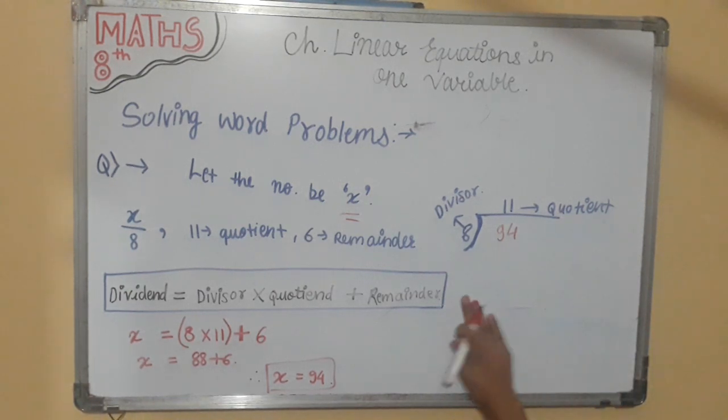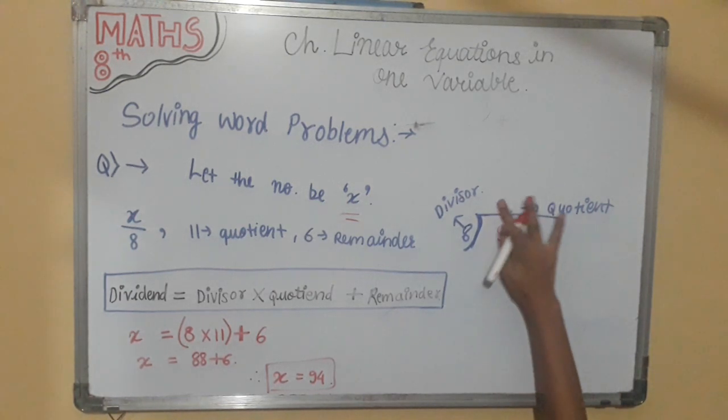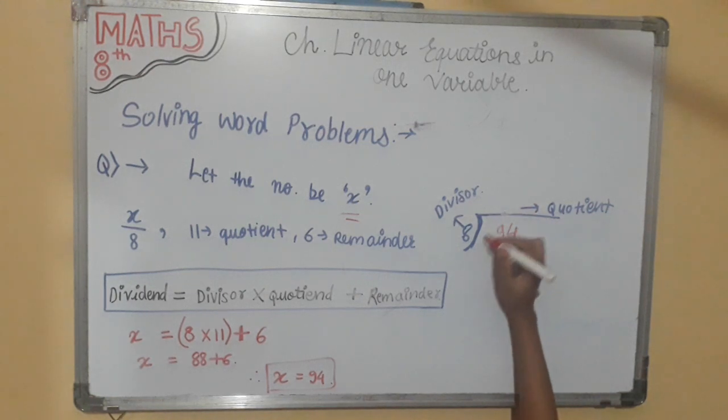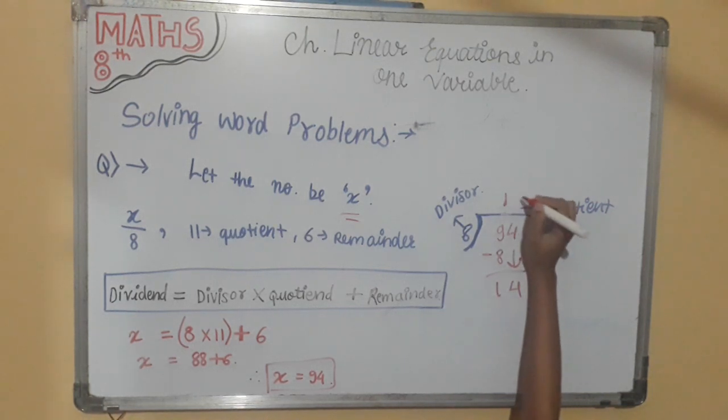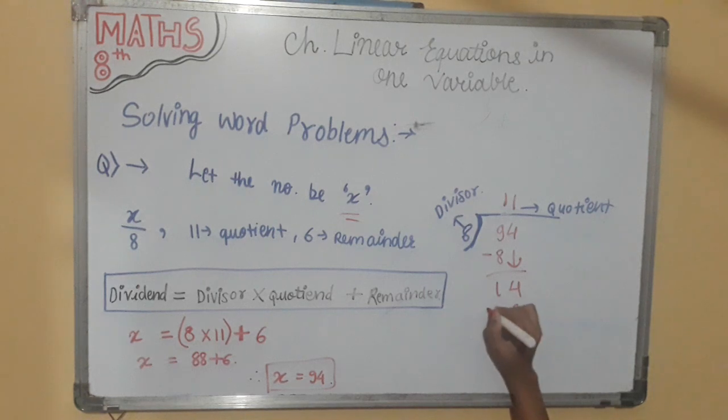First we will forget this all. 8 once a 8. Upon remainder 1. This will come downwards 14. 8 again once a 8. We will subtract. 6 will be the remainder.